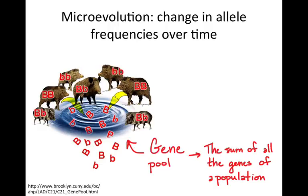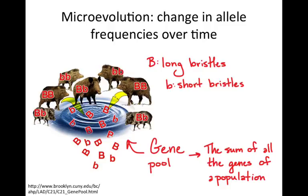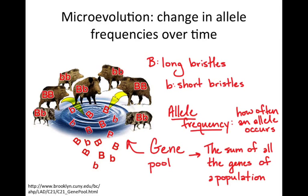Say for a particular gene B, there would be a dominant allele — big B — for long bristles, and a recessive allele — little B — for short bristles. With genetic analysis, you could count up all the homozygous dominant, heterozygous, and homozygous recessive individuals, and get the proportions of that dominant and recessive allele in the population. That gives you allele frequency — how often the allele occurs in the population.